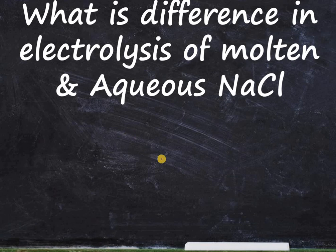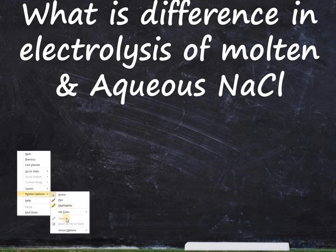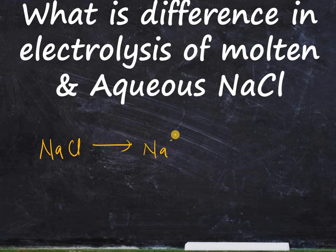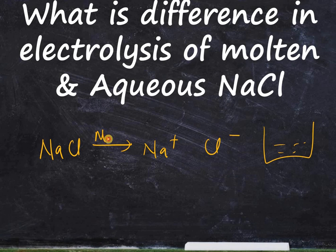In this video I am going to talk about the difference in electrolysis of molten and aqueous NaCl. NaCl is the same ionic compound, so it will behave in a similar way whether you dissolve it in water or melt it. Molten means you heat NaCl until it separates into ions — you will find only Na+ and Cl- ions in the container. This is called the molten stage.